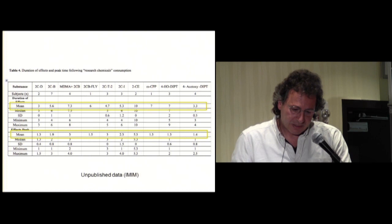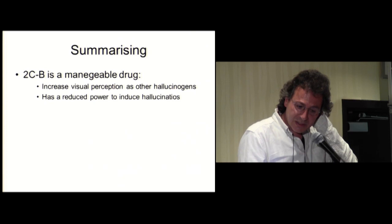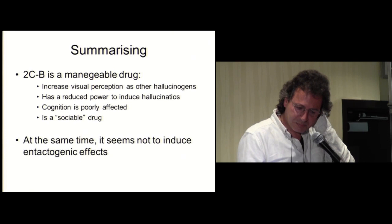Summarizing, 2CB is a manageable drug, increases visual perception as other hallucinogens, has a reduced power to induce hallucinations, cognition is poorly affected, is a sociable drug, at least in recreational settings, and at the same time, it seems not to induce entactogenic effects.